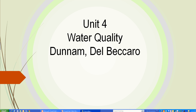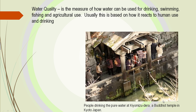This is SAT 105, Unit 4, Water Quality. Water quality is the measure of how water can be used for drinking, swimming, fishing, and agricultural use.